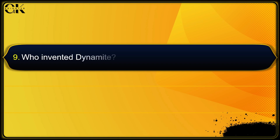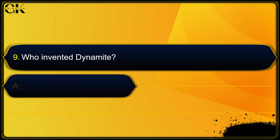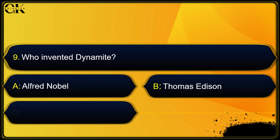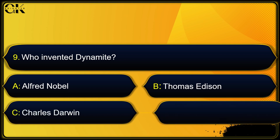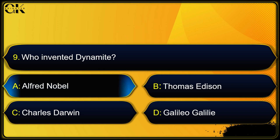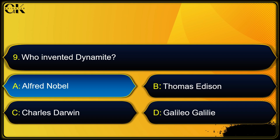Who invented dynamite? Options: Alfred Nobel, Thomas Edison, Charles Darwin, or Galileo Galilei. The answer is Alfred Nobel.